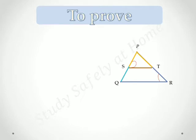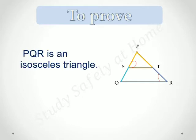To prove PQR is an isosceles triangle, that means PQ is equal to PR.